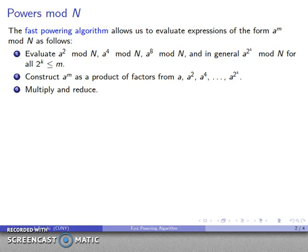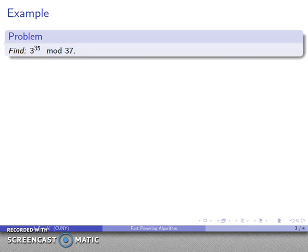And this innovative algorithm was invented around 200 B.C. in a slightly different context in India. And that's a story for another day. But let's go ahead and take an example here. We want to find 3 to power 35 mod 37. So what I'm going to do is I'm going to evaluate 3 to power 2^k for any value of 2^k that's less than 35. So let's start out.